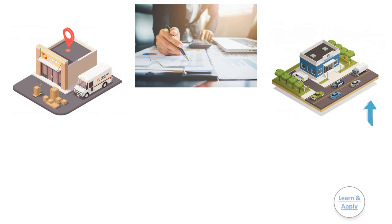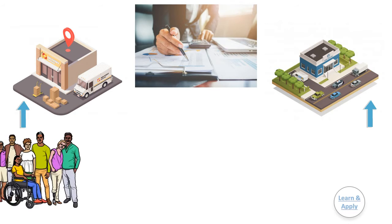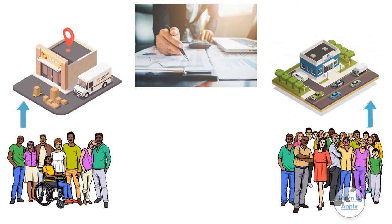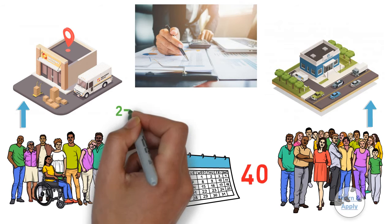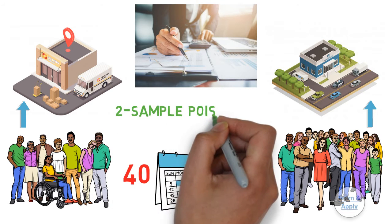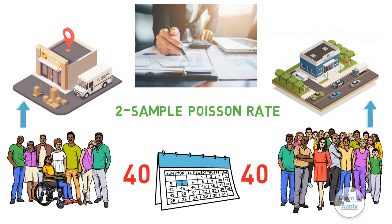For example, the analyst for the postal service wants to compare the number of customer visits at two post offices. The analyst counts the number of customers that enter the East Post Office for 40 business days. The analyst then performs a two-sample Poisson rate test to determine whether the daily rate of customer visits is different between the two post offices.